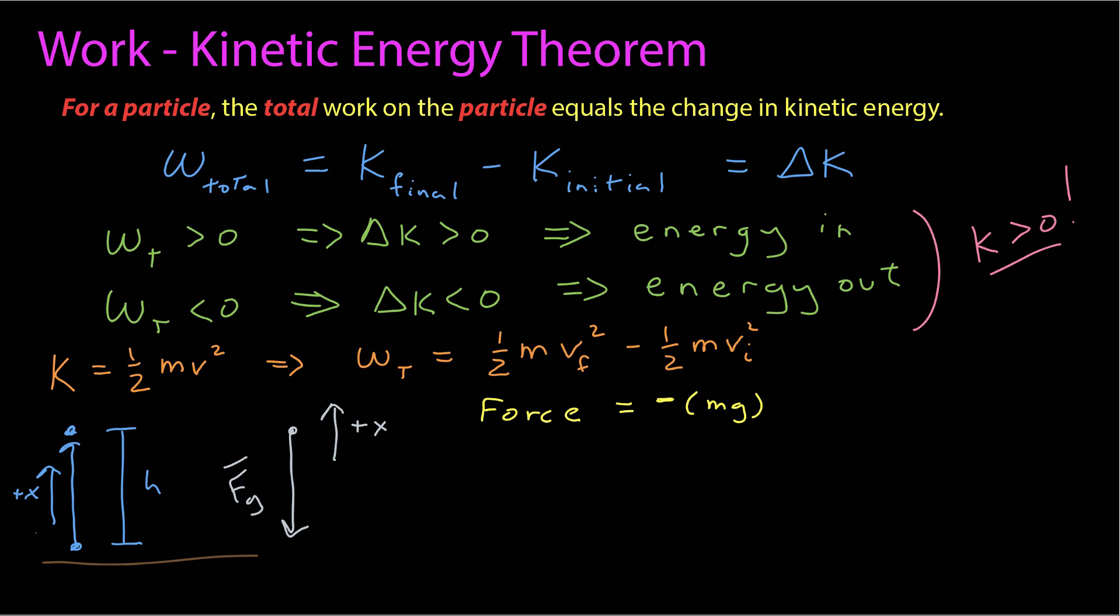So my force has some magnitude, which is the mass of the object times g, and since it's pointing down, I'm going to give it a negative sign indicating the direction for my one-dimensional vector notation, where the value is the magnitude of the force and the sign indicates direction.